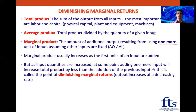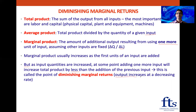Marginal product usually increases as the first units of an input are added — the next worker added contributes more than the previous worker did. But as input quantities are increased, at some point adding one more unit will actually increase total product by less than the previous input. So the next person who joins adds less output than the previous person. This is called the point of diminishing marginal returns — output is increasing, but at a decreasing rate.